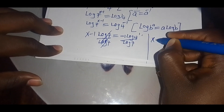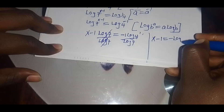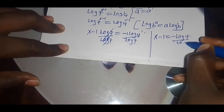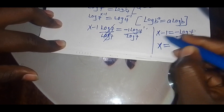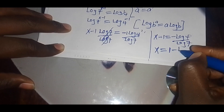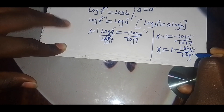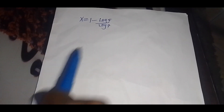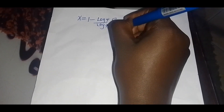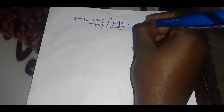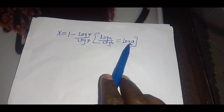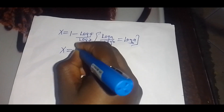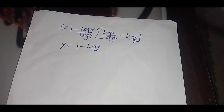Dividing both sides by log 7, we have x minus one equals negative log 4 divided by log 7. Taking the negative one to the other side gives x equals one minus log 4 divided by log 7. Applying the change of base identity, log 4 divided by log 7 equals log of 4 to base 7. Therefore x equals one minus log₄ to base 7.